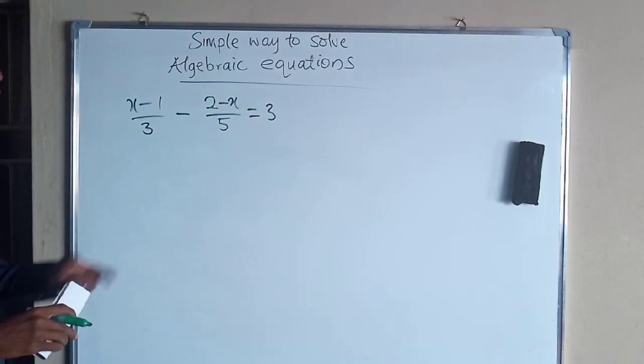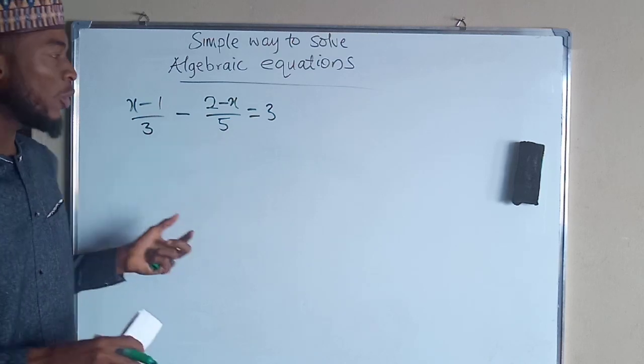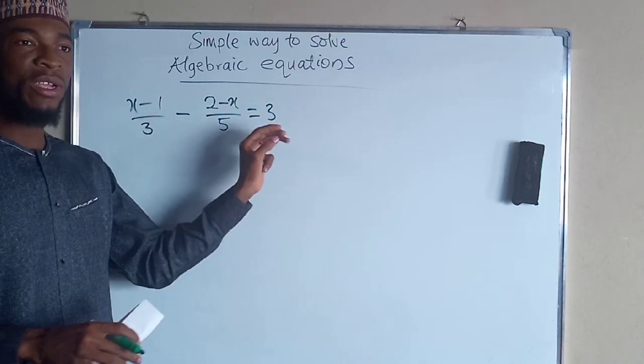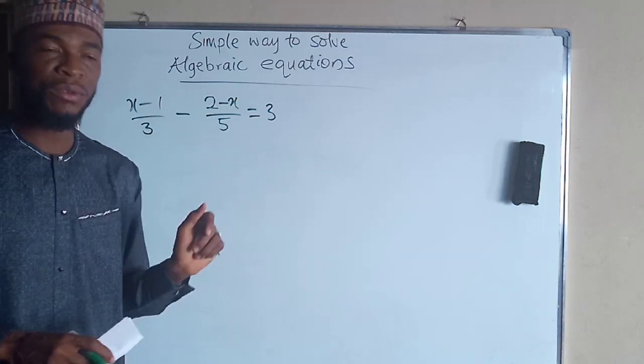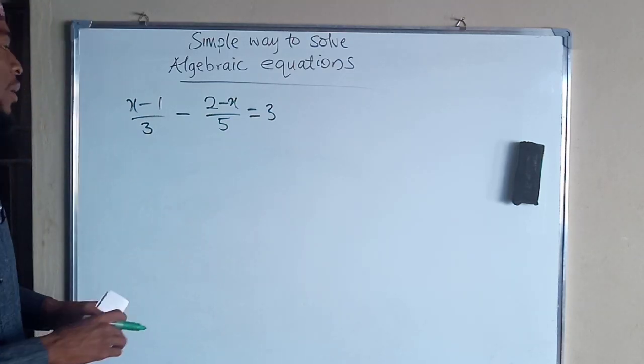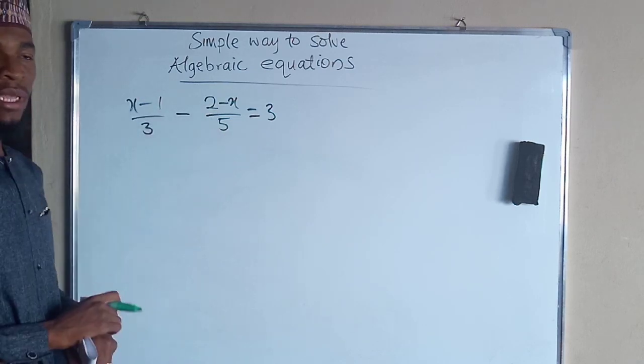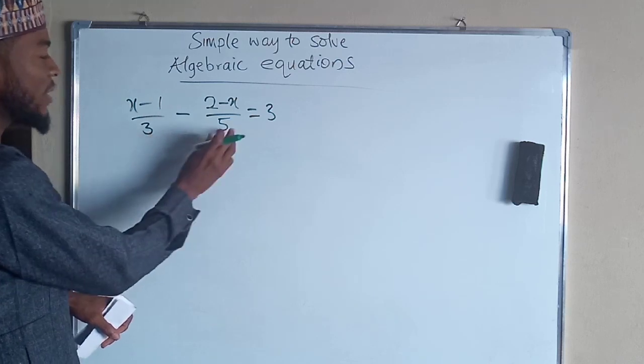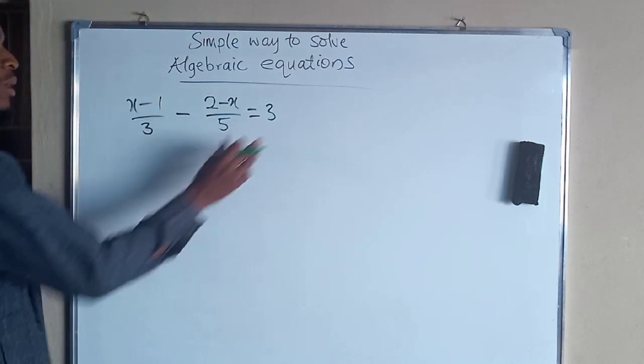Now we have denominators 3 and 5. Please, before going further, please try as much as you can to eliminate them out. How do we do that? By multiplying each term by the LCM of these denominators. And the LCM of 3 and 5 is 15. So we are going to multiply each term by 15.